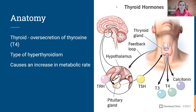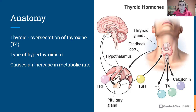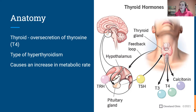Tertiary hyperthyroidism would be if it's coming from the hypothalamus telling the pituitary gland to release too much. So just remember: if it's primary, it's the thyroid; if it's secondary, it's the pituitary; and if it's tertiary, it's the hypothalamus. This is a type of hyperthyroidism, and what it's going to do is increase our metabolic rate.